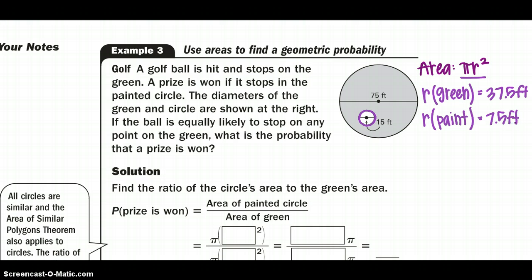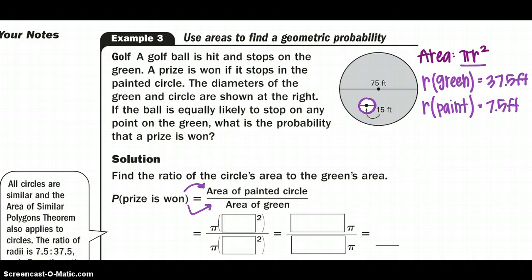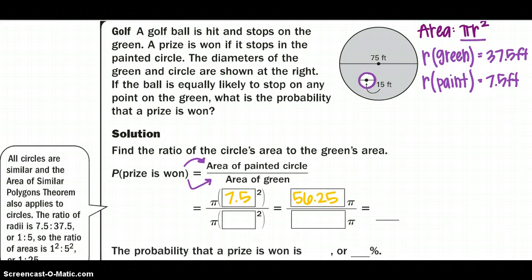Alright, now we are ready to solve for the areas. So we need to find the area of the painted, because that's when the prize is won. That's what we want to happen. And then we need to find the area of the entire region that we are looking at. So we're going to put the painted circle on top. Our radius is 7.5, so pi times 7.5 squared, which gives us 56.25 pi. And then that is going to be divided by our green, which is pi times 37.5 squared, which is 1,406.25 pi.